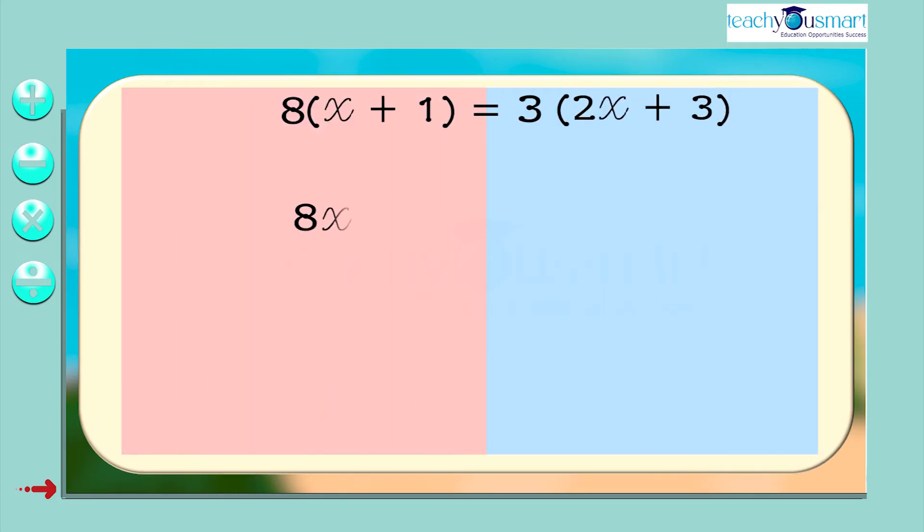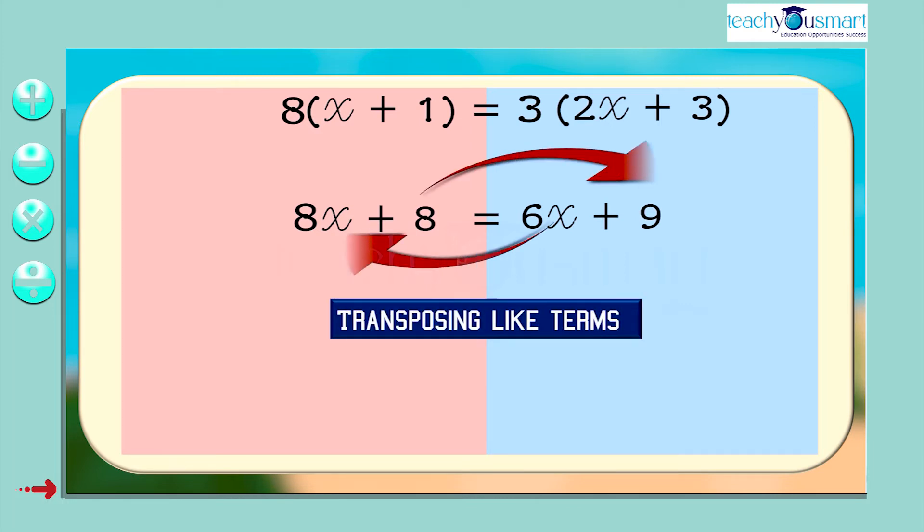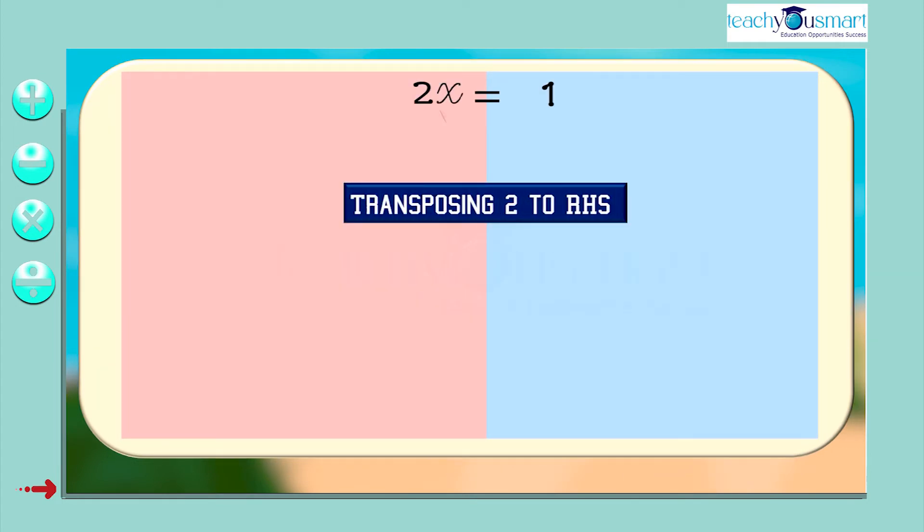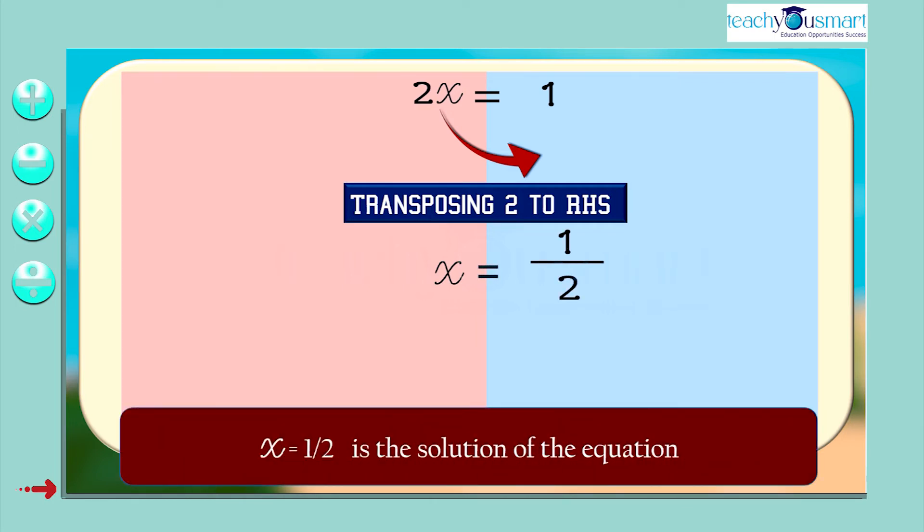That is, 8x plus 8 equals 6x plus 9. Transposing like terms, 8x minus 6x equals 9 minus 8. That is, 2x equals 1. Transposing 2 to RHS, x equals 1 by 2. That is, x equals 1 by 2 is the solution of the equation.